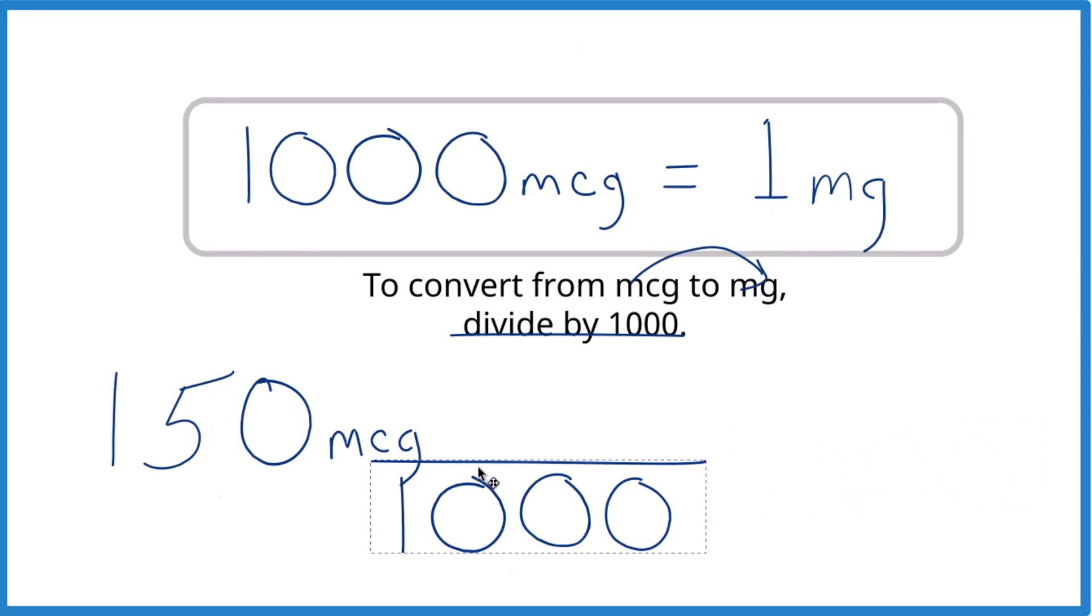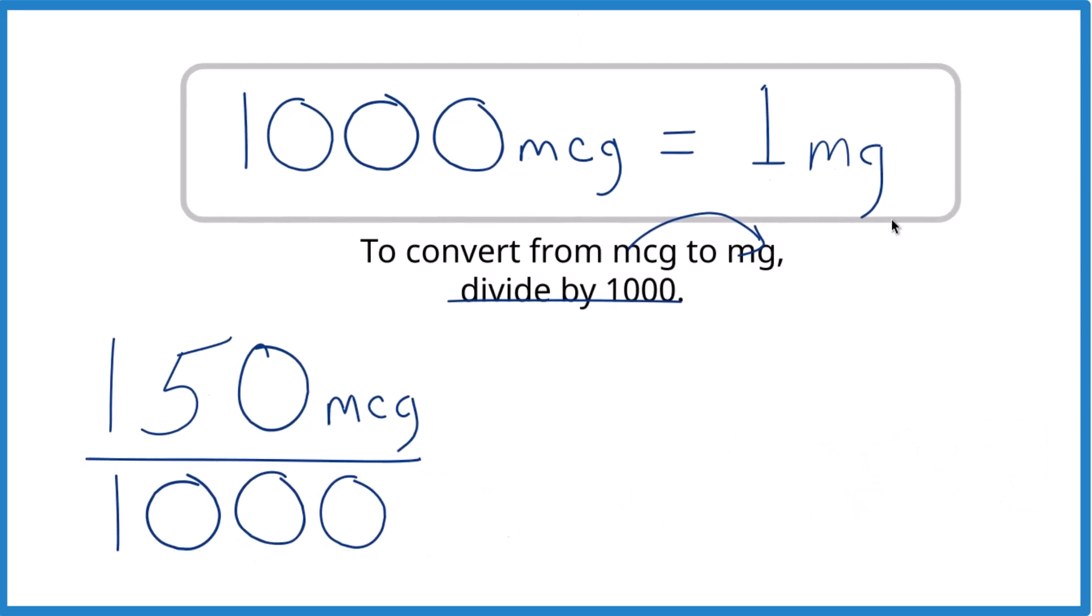So 150 divided by 1,000, and it's micrograms, 1,000 micrograms per milligram. It's kind of nice to have that unit in there, micrograms per milligram.